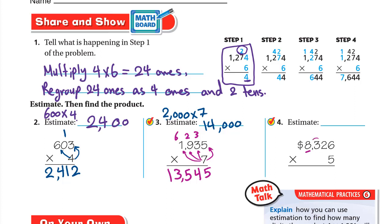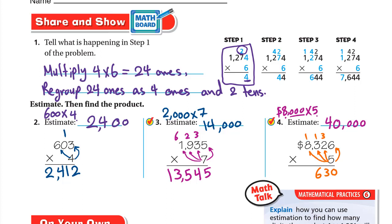Last problem: estimate $8326 times 5. Round to the nearest thousand: 3 is a weak digit, so keep it 8000. 8000 times 5: 8 times 5 is 40, write the three zeros — estimate is 40,000. Now multiply exactly: 5 times 6 is 30, write 0 carry 3. 5 times 2 is 10 plus 3 is 13, write 3 carry 1. 5 times 3 is 15 plus 1 is 16, write 6 carry 1. 5 times 8 is 40 plus 1 is 41. So 8326 times 5 equals 41,630.